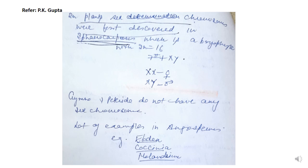In plants, the sex chromosomes were first discovered in Sphaerocarpos, which is a bryophyte with 2n equal to 16 chromosomes. In these 16 chromosomes there are 7 pairs of autosomes and 2 sex chromosomes. When the two sex chromosomes are XX, the plant is female, and when the sex chromosomes are XY, the plant is male. So in Sphaerocarpos, sex determination is similar to humans.